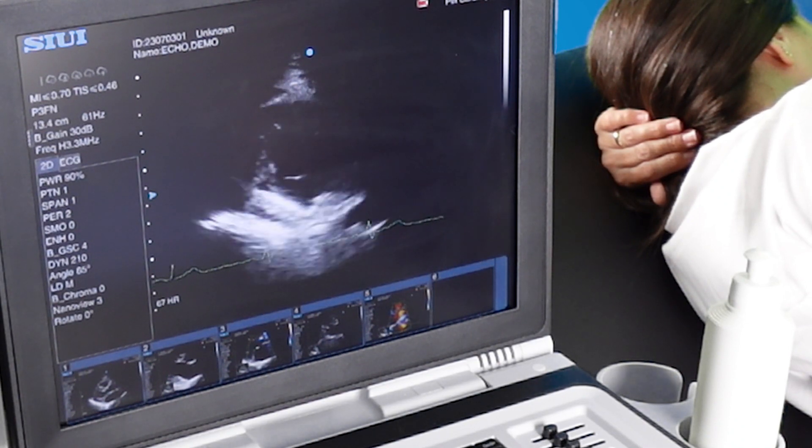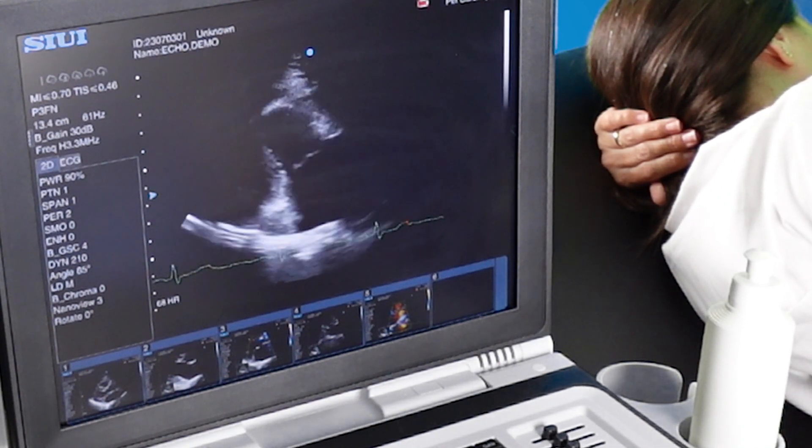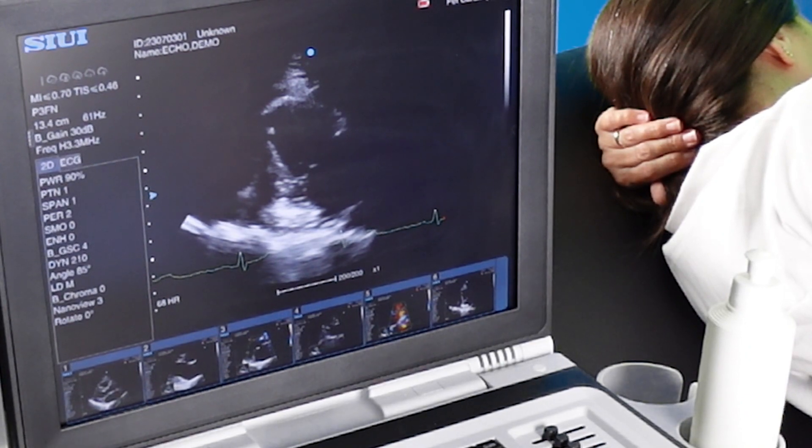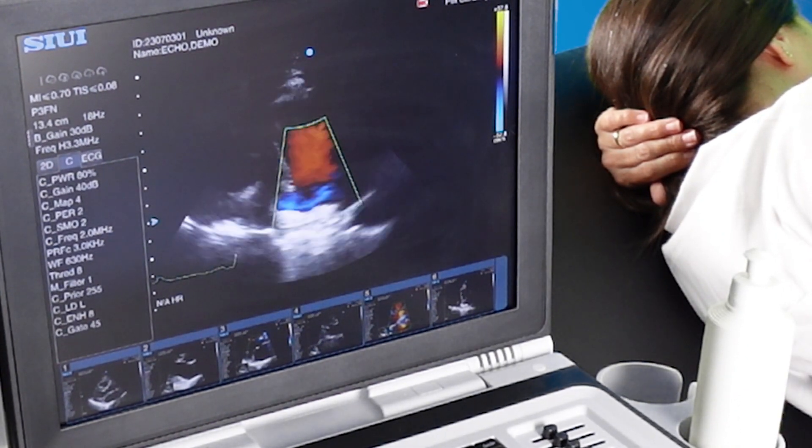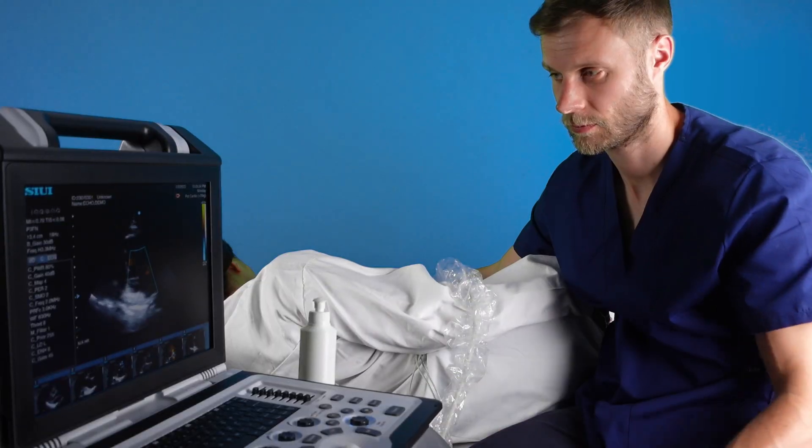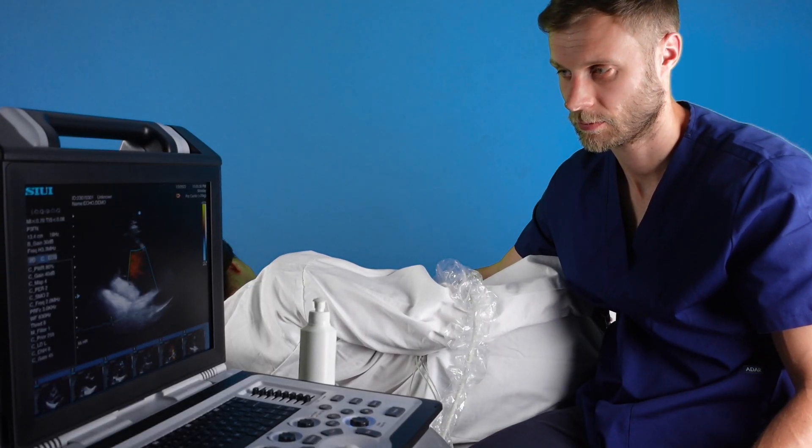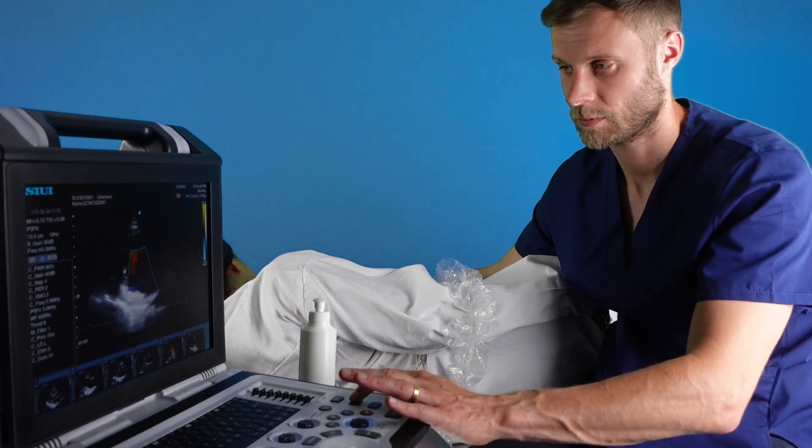This is the right ventricular inflow view, looking at the tricuspid valve. Again, color Doppler over the valve to check for any significant regurgitation.